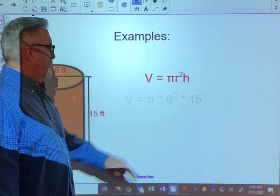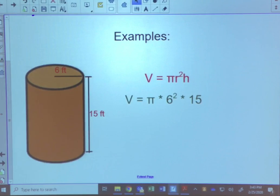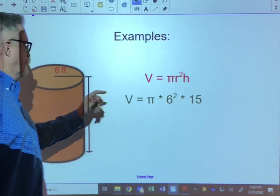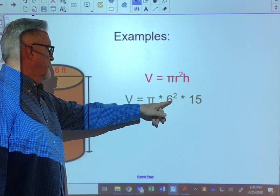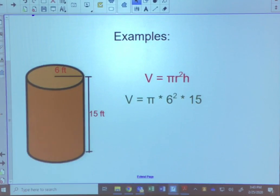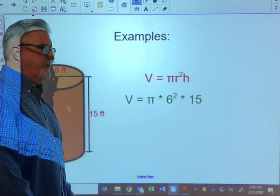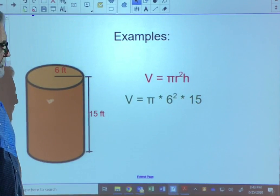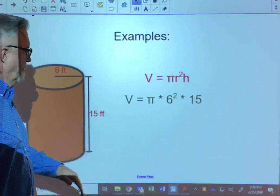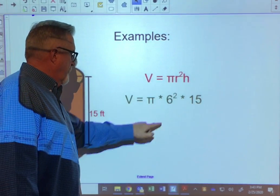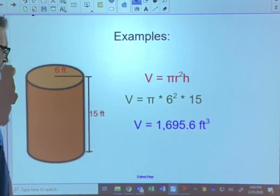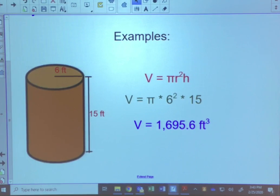So when we plug it in, we're going to have volume is equal to pi times the radius squared. The radius is 6, so we plugged in 6, times the height. The height was 15, so we plugged that in. Your calculator is going to do the work for you. So if you plug this in exactly like we've written it, your final answer is going to be volume is equal to 1,695.6 cubic feet.